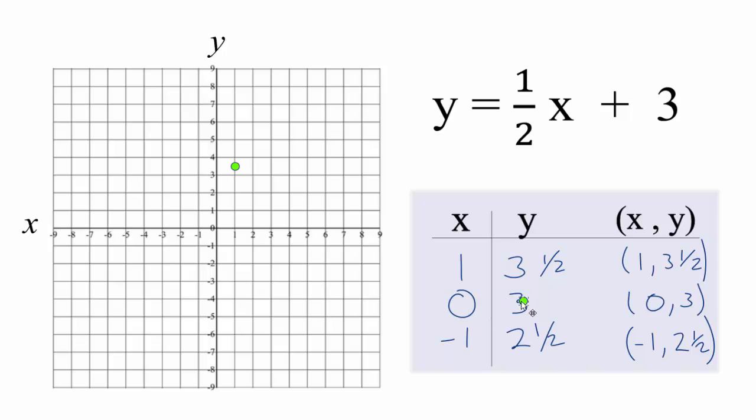We have x is 0 and y is 3. So we find x is 0, y is 3. X is negative 1, y is two and a half. So you have negative 1 and two and a half.